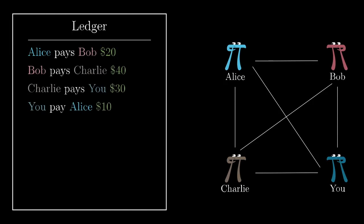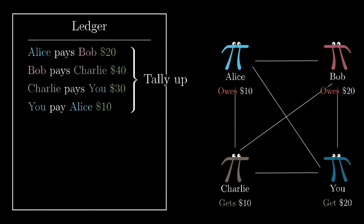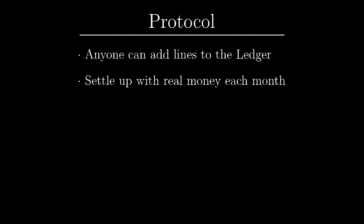This ledger is going to be something public and accessible to everyone, like a website where anyone can go and just add new lines. And let's say that at the end of every month you all get together, look at the list of transactions and settle up. If you spent more than you received you put that money in the pot and if you received more than you spent you take that money out. So the protocol for being part of this very simple system might look like this. Anyone can add lines to the ledger and at the end of every month you all get together and settle up.